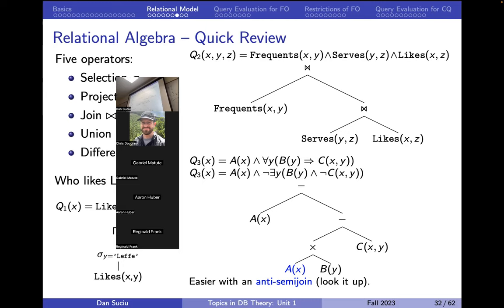Why isn't there a projection at the top of that expression? Because we have a unary relation on the left-hand side and the right-hand side is binary. That's because of my mistake. How should we fix it? We need to introduce a projection operator here because I don't need y anymore. And doing the Cartesian product with A — I think that's correct, but let me double-check.